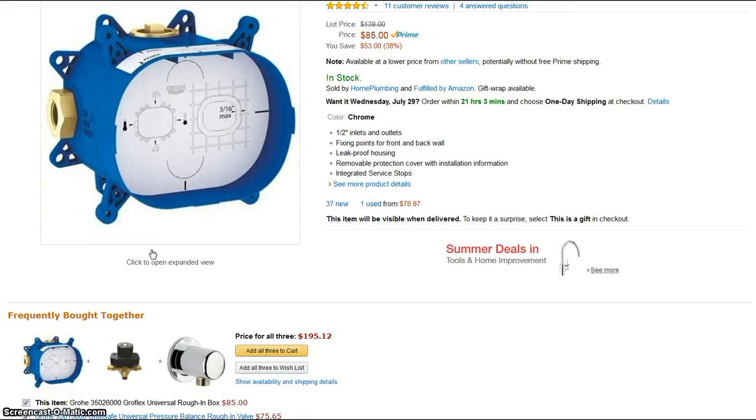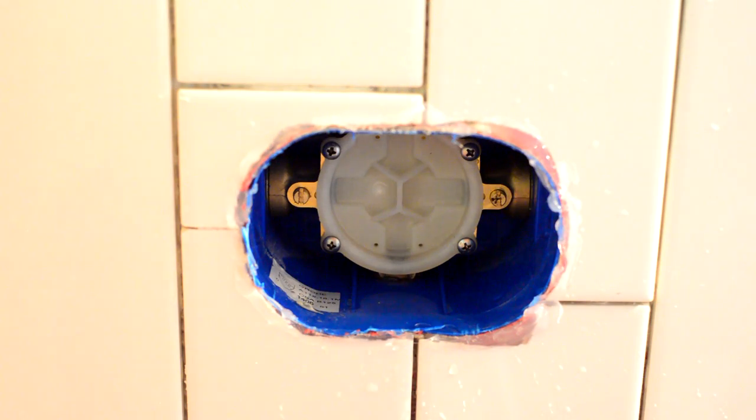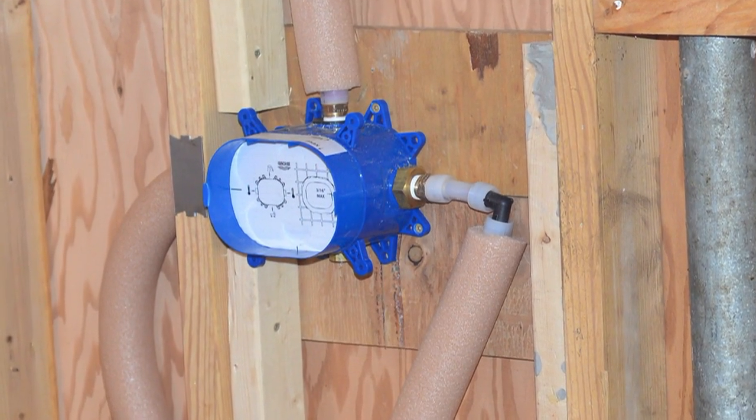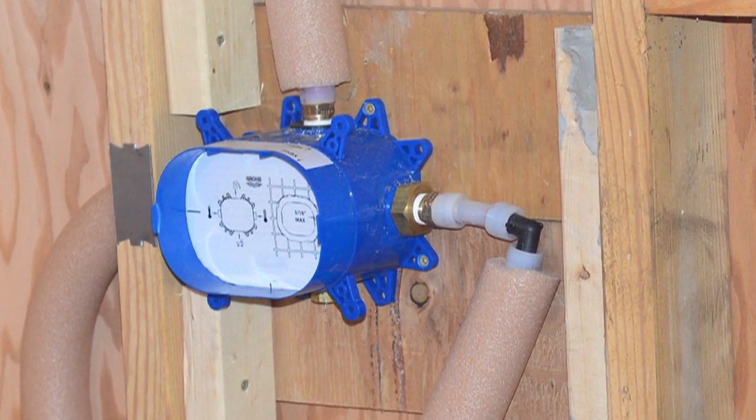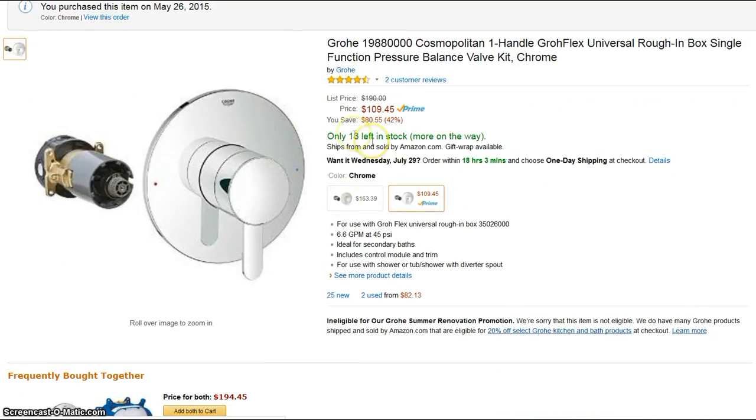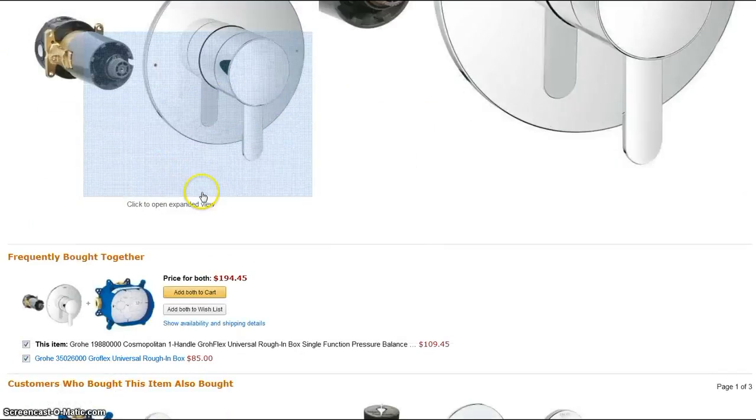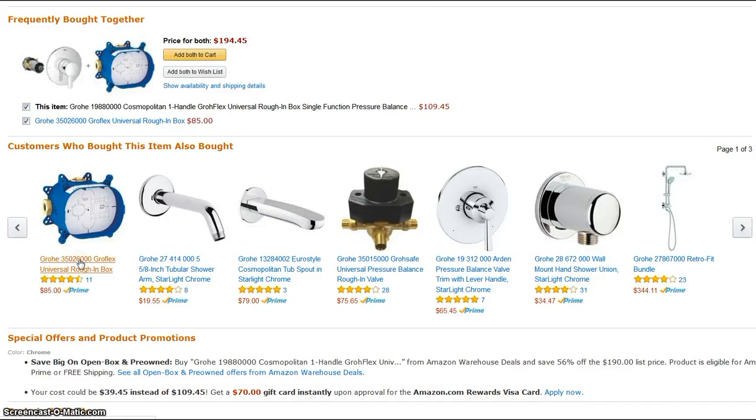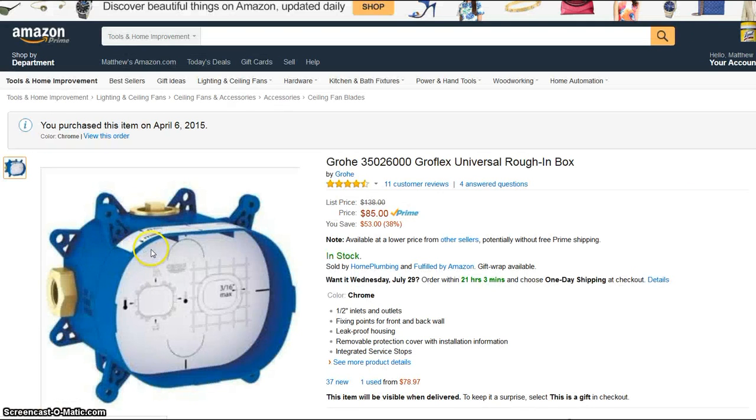There's two parts of a shower valve as I have found out. One is the rough-in valve, and let me show you some pictures of what it looks like behind the wall. This particular valve, and I'll put the model number below, is called thermostatically controlled.